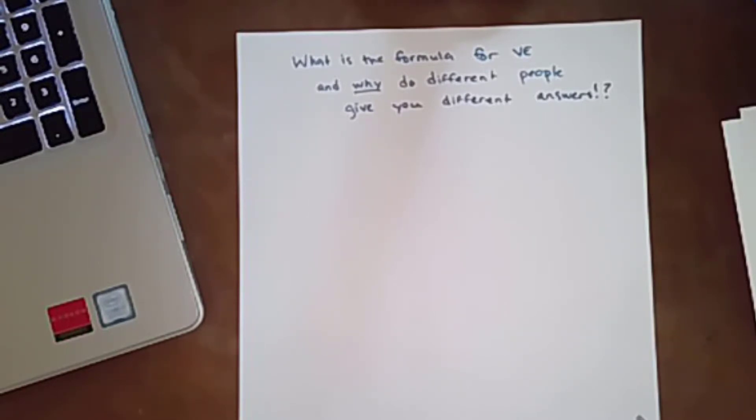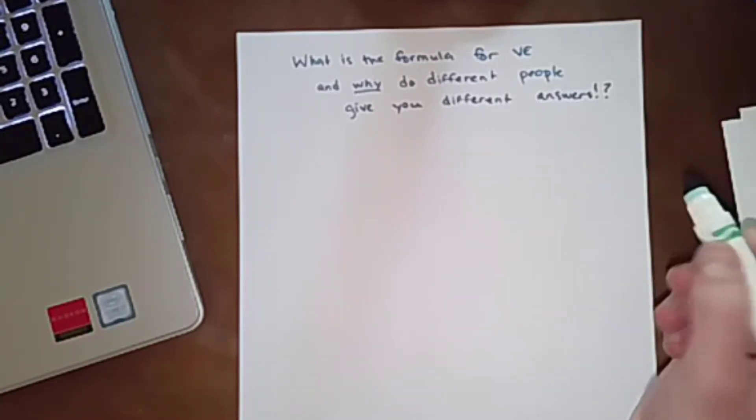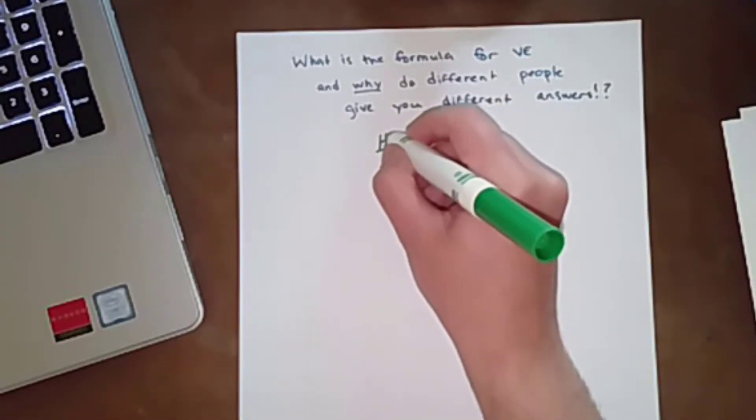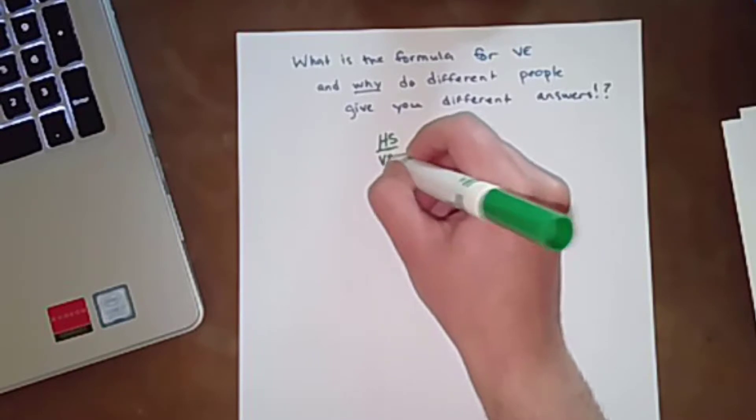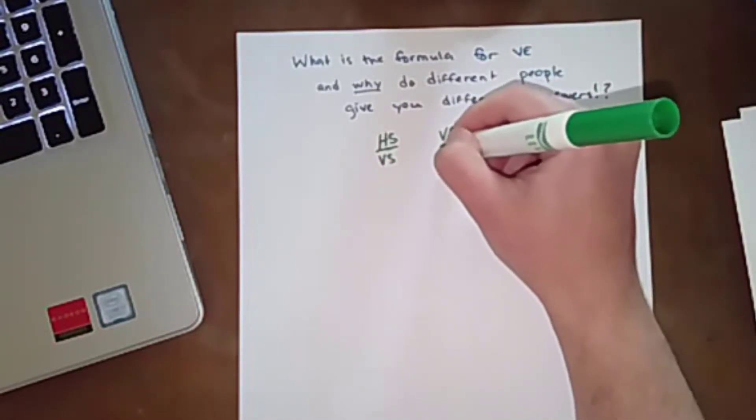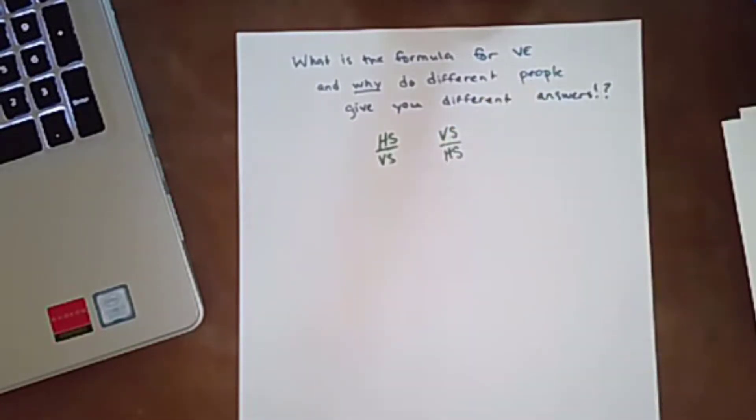My guess is that you have seen two different answers to this question. You've probably seen somebody write that it is horizontal scale divided by vertical scale, or you've seen someone write vertical scale divided by horizontal scale, and that's got to be incredibly confusing.